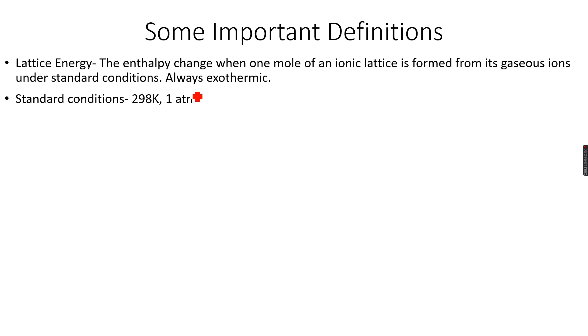I've written over here that lattice energy is always exothermic. This is because bond forming is always exothermic, and bond breaking is always endothermic. Here we are talking about one mole of an ionic lattice being formed. If it is formed, it means that ionic bonds have been formed. So as ionic bonds have been formed, it has to be exothermic because bonds have been formed.